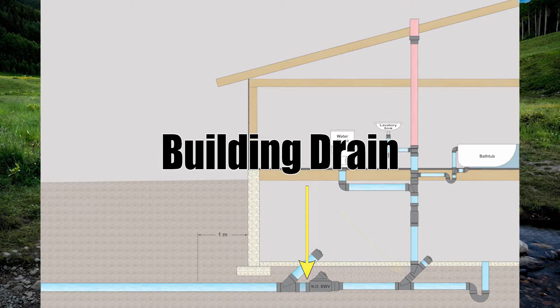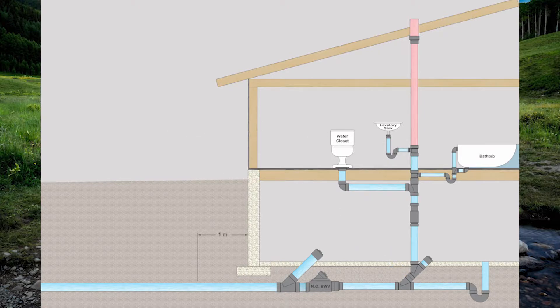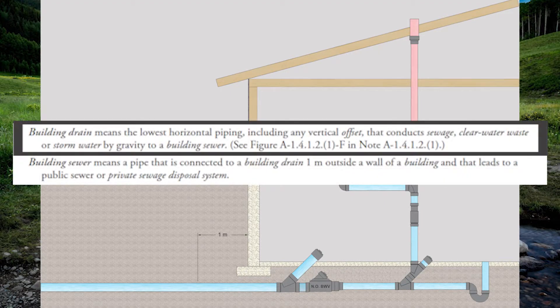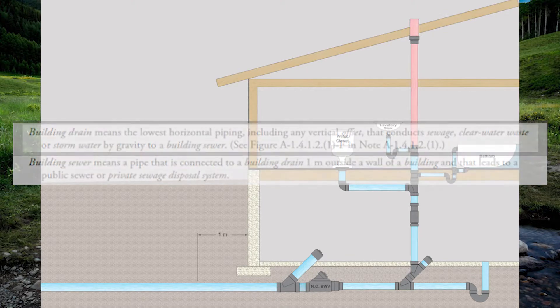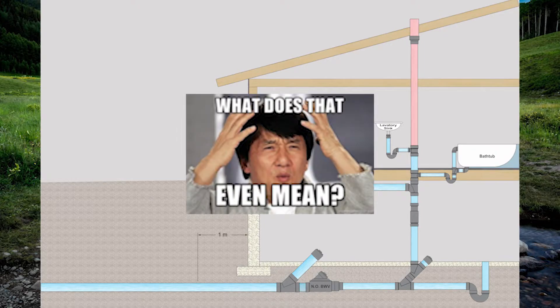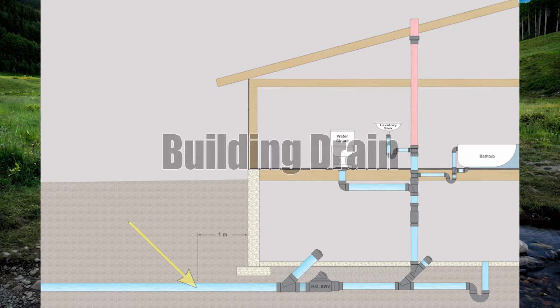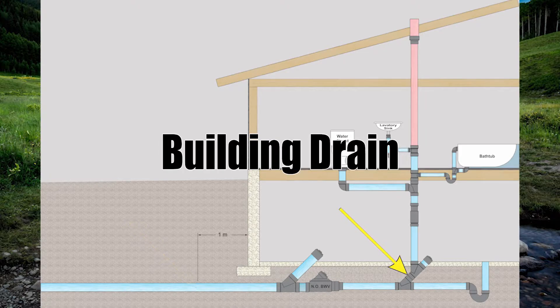At the one meter mark the building sewer ends and the building drain begins. This building drain will continue underneath the footing, through these devices, and end at the vertical pipe we call the main stack. The code definition for building drain is: the lowest horizontal piping, including any vertical offset, that conducts sewage, clear water waste, or storm water by gravity to a building sewer. In practice, it's industry standard to start at the building sewer and end at the main stack.